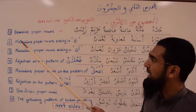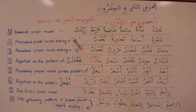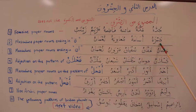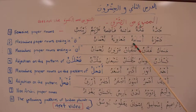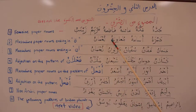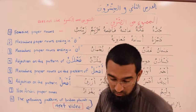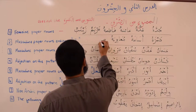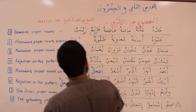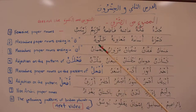The second category is masculine proper nouns that end with ta'ul marbootah. Names of men or males — like Hamzah, Usamah, Mu'awiyah, and Talhah — are ممنوع من الصرف because they are masculine proper nouns ending with ta'ul marbootah.